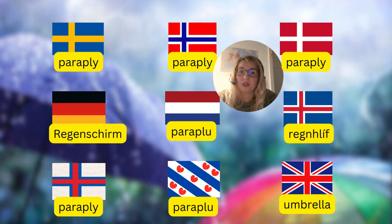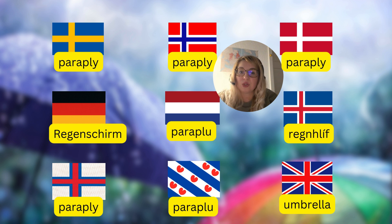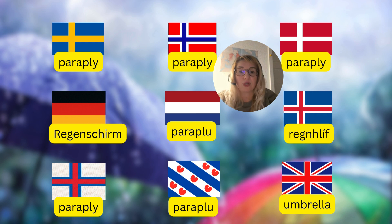We have reached the final word from the autumn list: umbrella. In English it is a borrowing from Latin 'umbra' meaning 'shade'. Most other languages preferred to borrow the term from French — 'parapluie', which essentially means 'against the rain'. Two languages were more creative: 'Regenschirm' in German means 'a shield against rain', and 'regnhlíf' in Icelandic means 'a coverage for rain'.